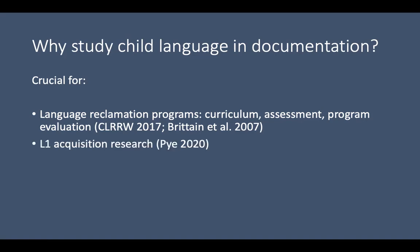Second, this is also important to academic first language acquisition research. As Clifton Pye has argued for decades, first language acquisition researchers have mostly ignored Indigenous people and Indigenous languages. That means that we don't know much about how first language acquisition happens in Indigenous social settings, or how it works for the grammatical features of Indigenous languages. So we also need to do this research from the general first language acquisition perspective.